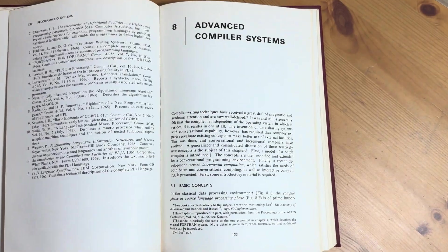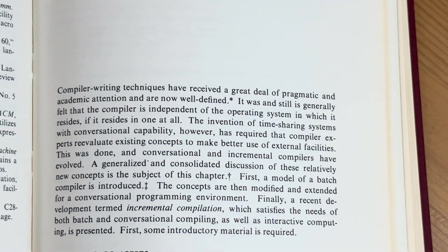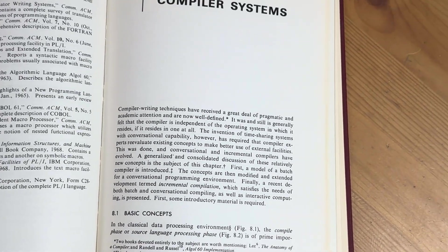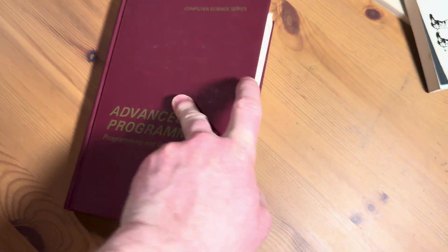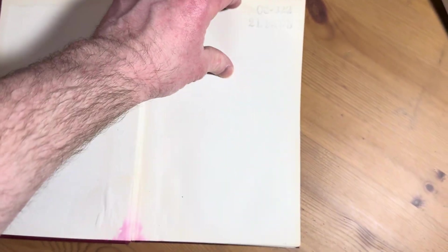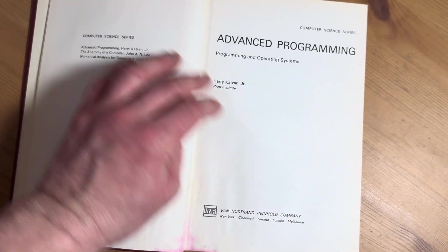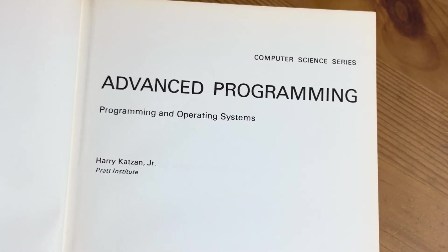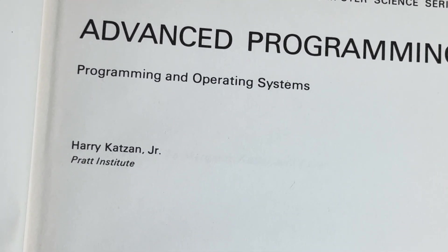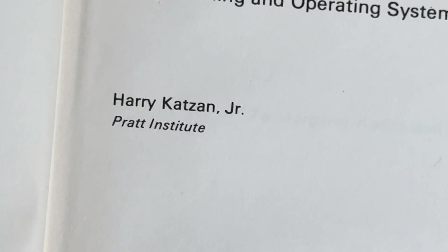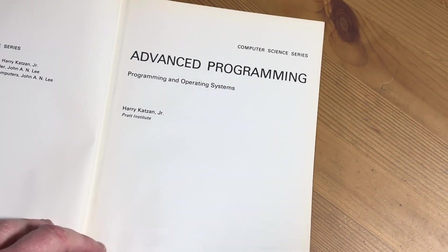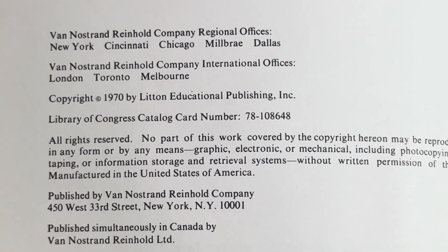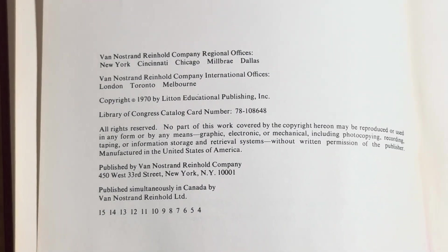Advanced Compiler Systems. Compiler writing techniques have received a great deal of pragmatic and academic attention and are now well defined. Let's look at the contents, see what it contains. This book is really old — pretty sure it's from the 70s, I think it's 1970. Advanced Programming, Computer Science Series, Programming and Operating Systems, Harry Katzen Jr., Pratt Institute. 1970 by Litton Educational Publishing, Inc.